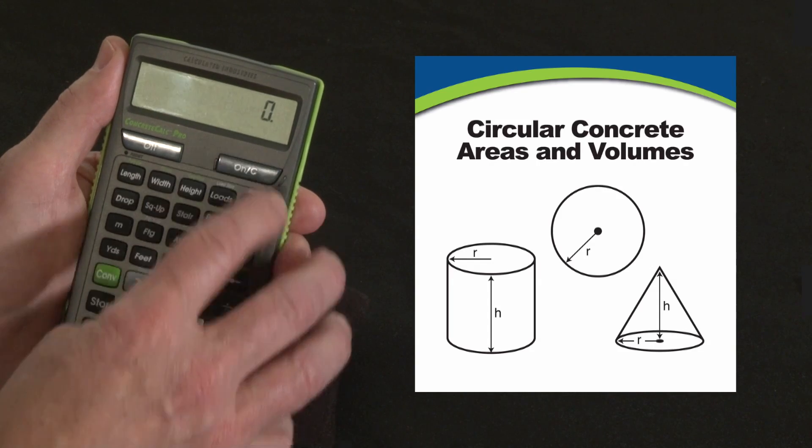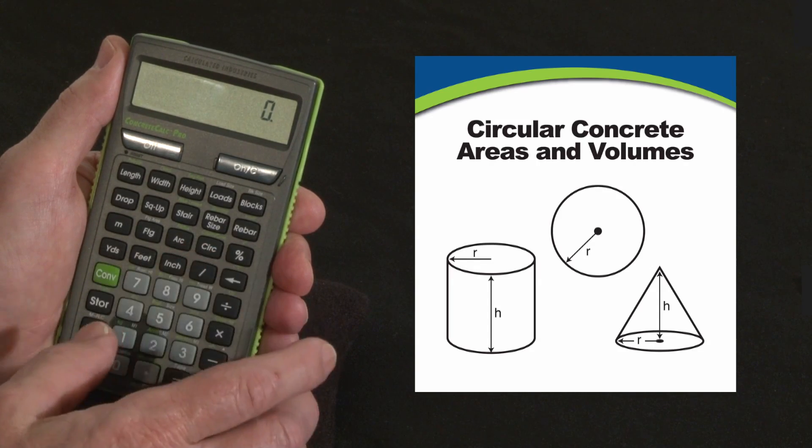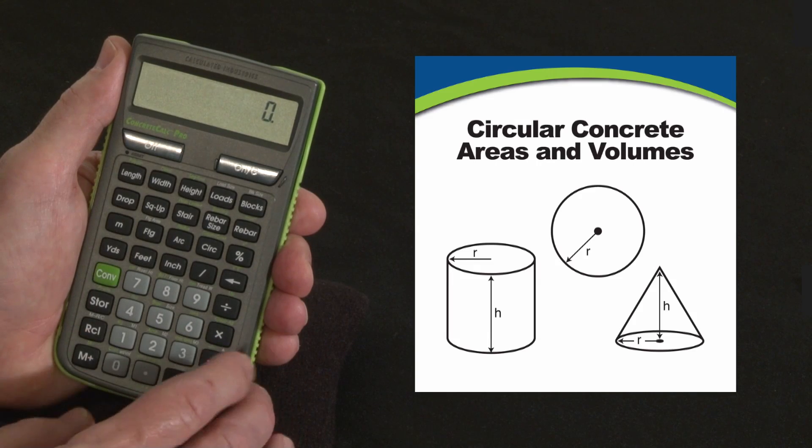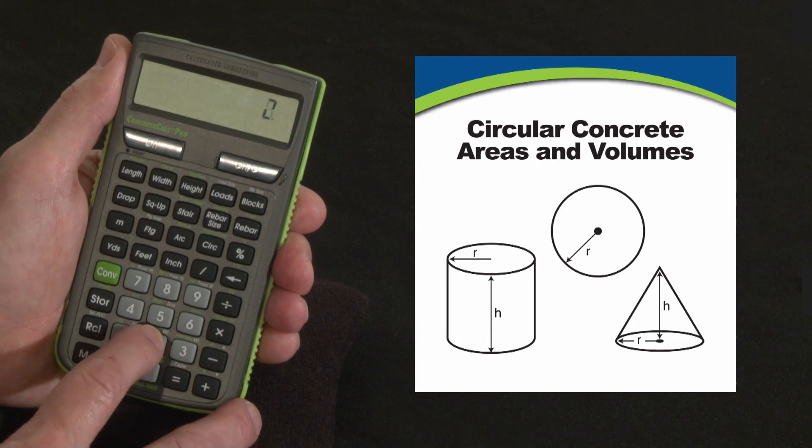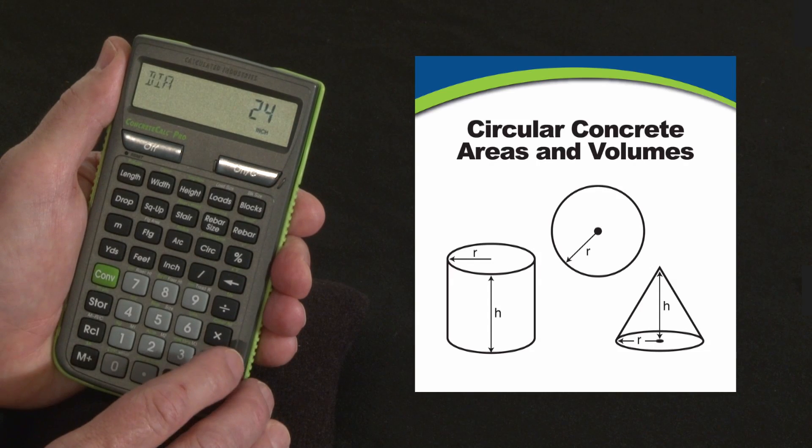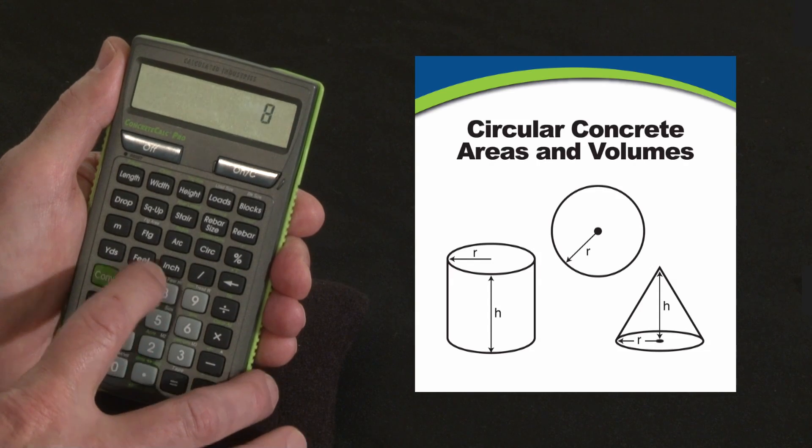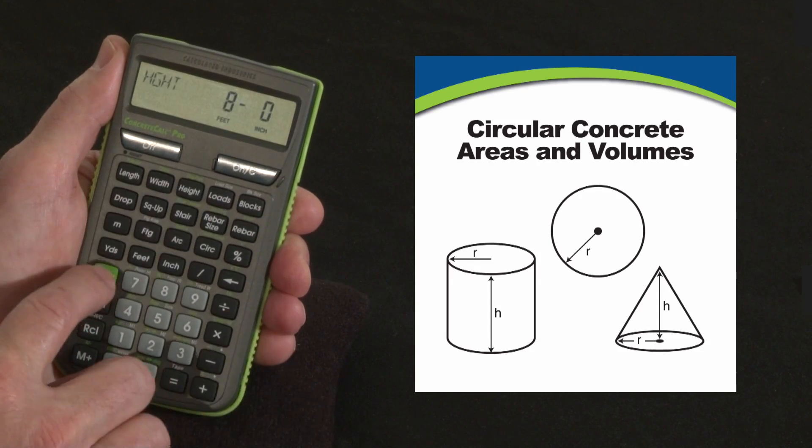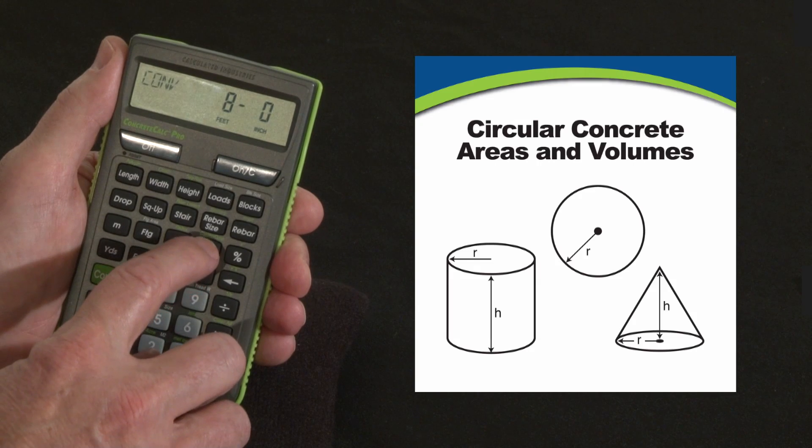You can also use the built in column cone function for figuring out cylindrical volumes and cone volumes. Say we've got a 24 inch diameter circle and we're going to make it 8 feet high. 8 feet is our height. Now we'd hit convert and over the circle key it says column cone.